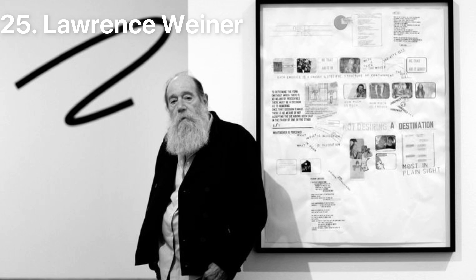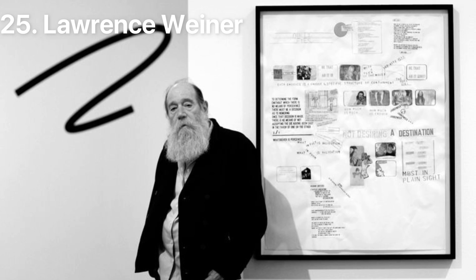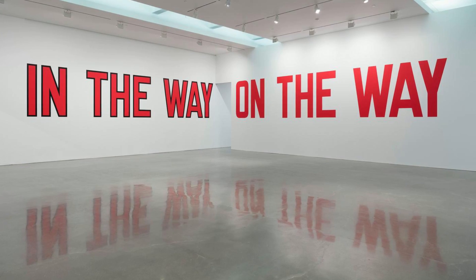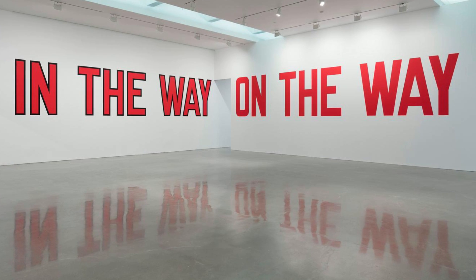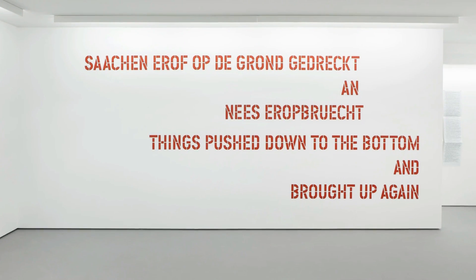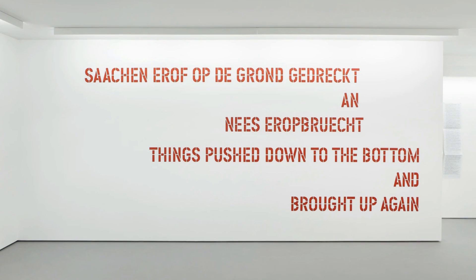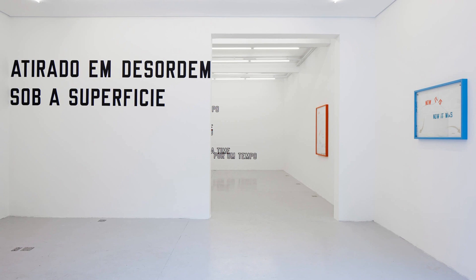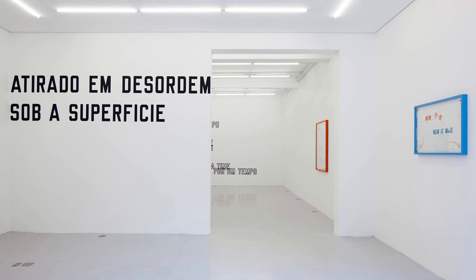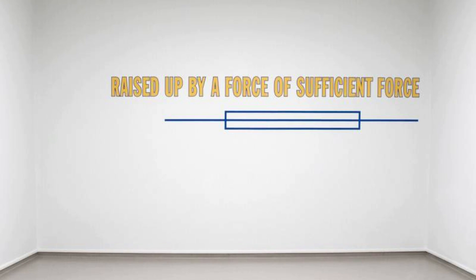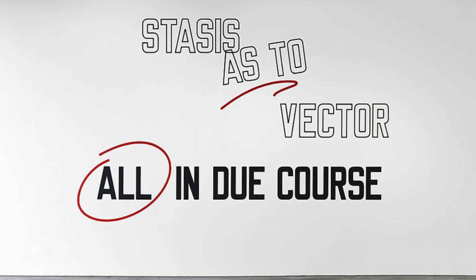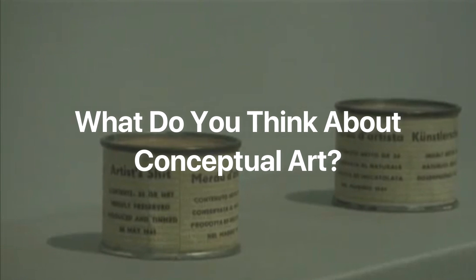Number twenty-five: Lawrence Weiner. Born in 1942 in the Bronx, New York, Lawrence Weiner lived and worked between New York City and Amsterdam before he passed away in 2021. He is the ideal artist to conclude this list, as one of the key figures of the conceptual art scene in the late 1960s and one of the most important artists of his generation. Weiner redefined the status of the artist, questioned conventions of objecthood in relation to the producer and the viewer, and used language as his medium — capital letters in structures, graphic lines, and shapes.